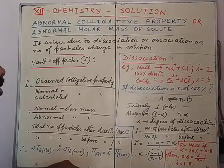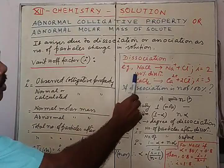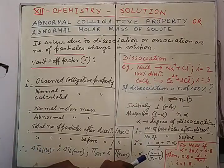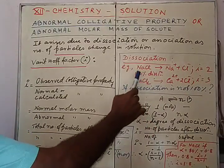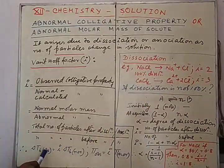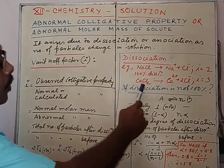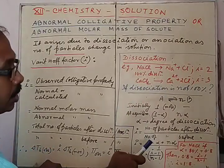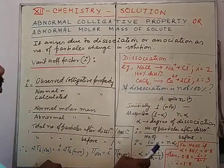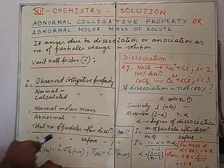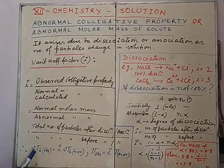Now, let us look at the case of dissociation and how it changes. In the case of NaCl, if 100% dissociation is taking place, then the I value becomes 2, meaning the number of particles doubles. So here, I is taken as 2. In the case of calcium chloride, if 100% dissociation is taking place, then I equals 3 due to the three ions coming from the CaCl₂ molecule, and we put I equal to 3 to get the observed value from the normal value.